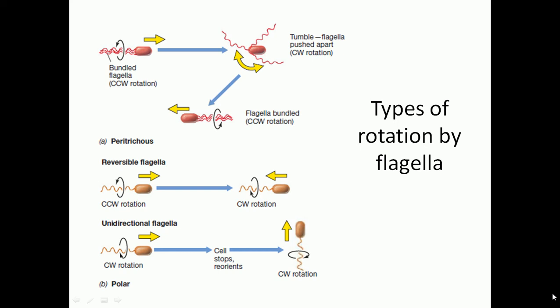In this video tutorial, I am going to talk about the types of rotation by flagella for bacteria. This is a unique topic because people may talk about the structure of flagella and chemotaxis, but generally do not talk about how bacteria actually rotate using flagella. Flagellar rotation is possible due to the L ring, M ring, P ring, and other rings forming a basal body with a rotor. The stator stays fixed while the rotor helps them to rotate.